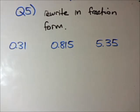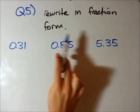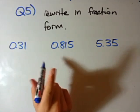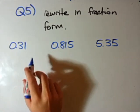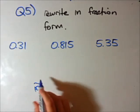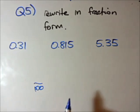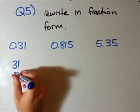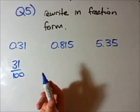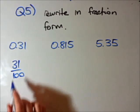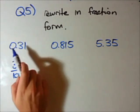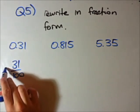In question 5, we want to rewrite these decimal numbers in fraction form — the opposite of question 4. Remember in question 4 we got the number over 100 and put it after the decimal point. So reversing that, we can write 0.31 straight away as 31 over 100. This can't be simplified anymore, so that's our answer.